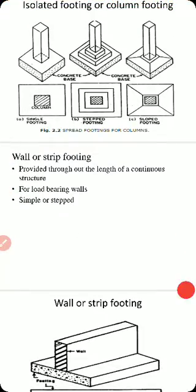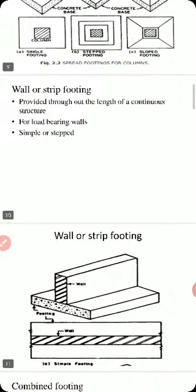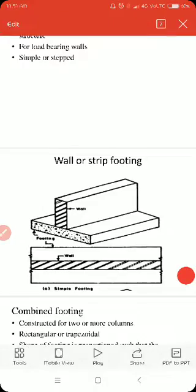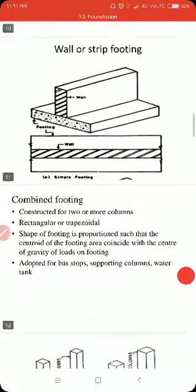The second type is wall or strip footing. As the name implies, it is provided under a load-bearing wall. It is of two types — stepped. It is provided throughout the length of the continuous structure. The figure of wall or strip footing clearly shows that the footing is provided under a load-bearing wall.